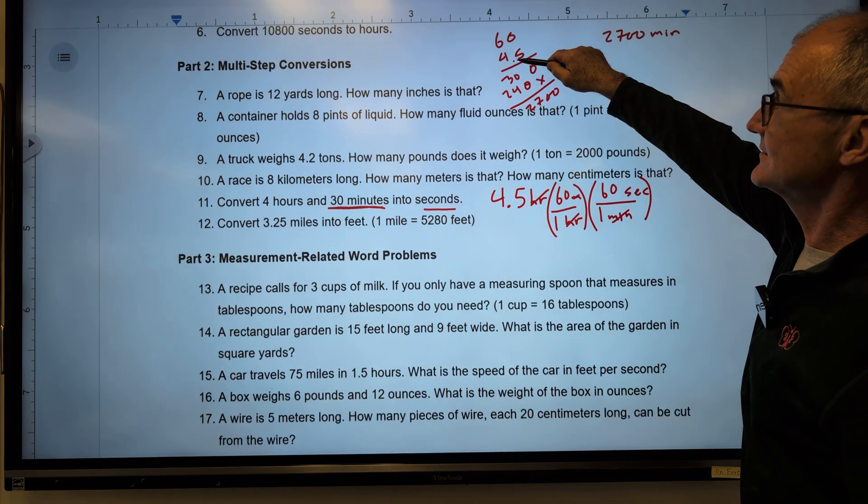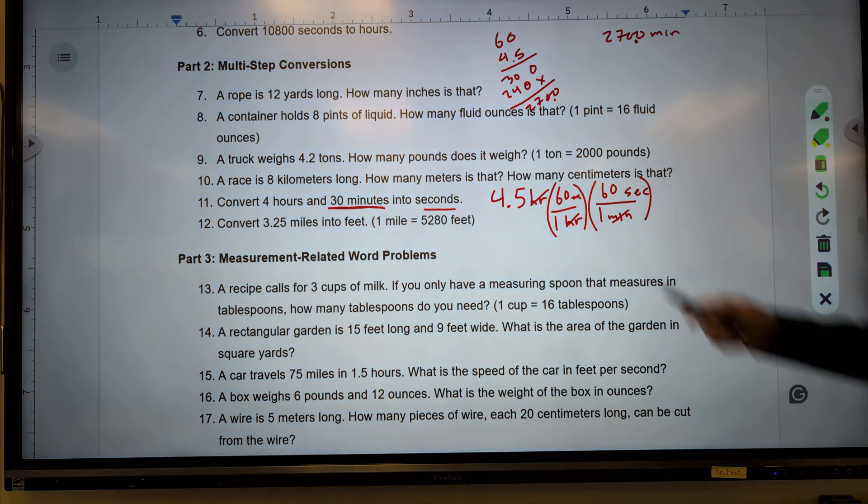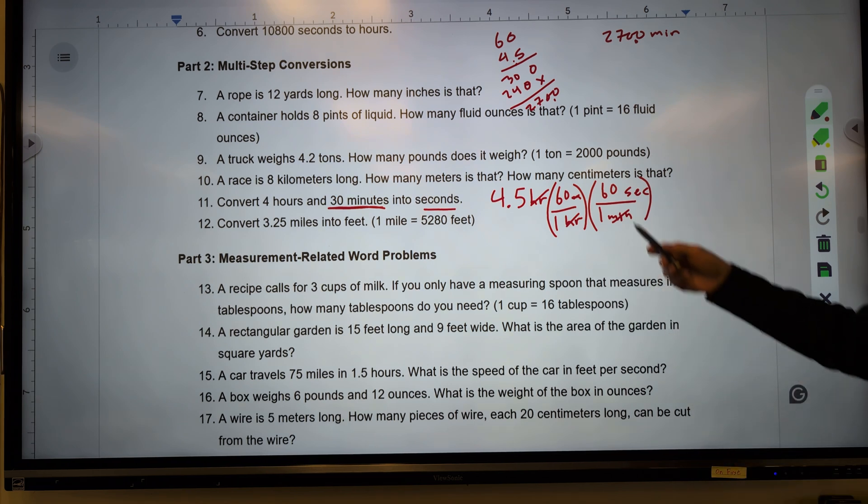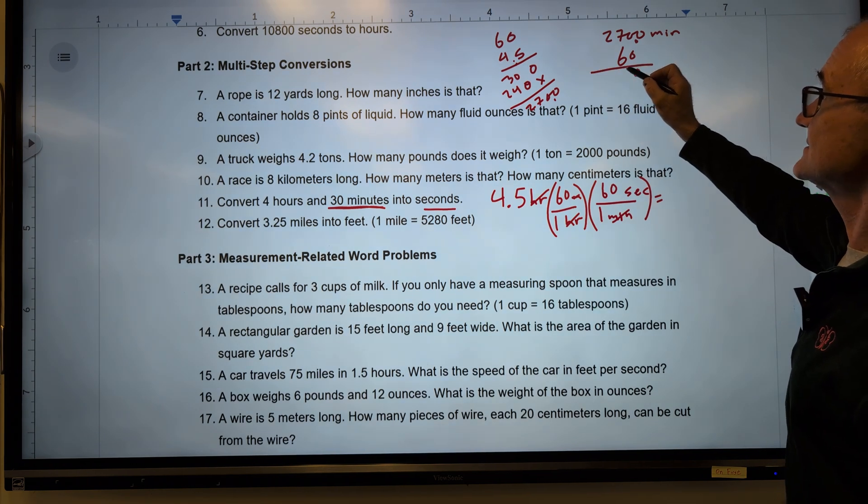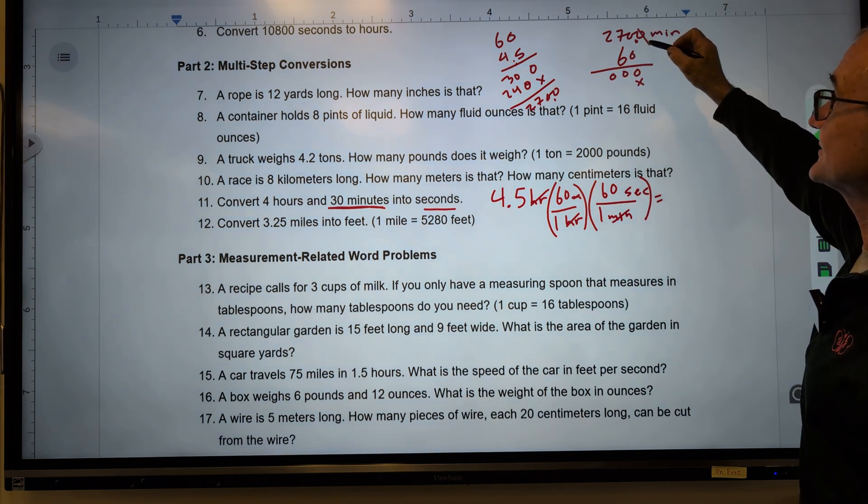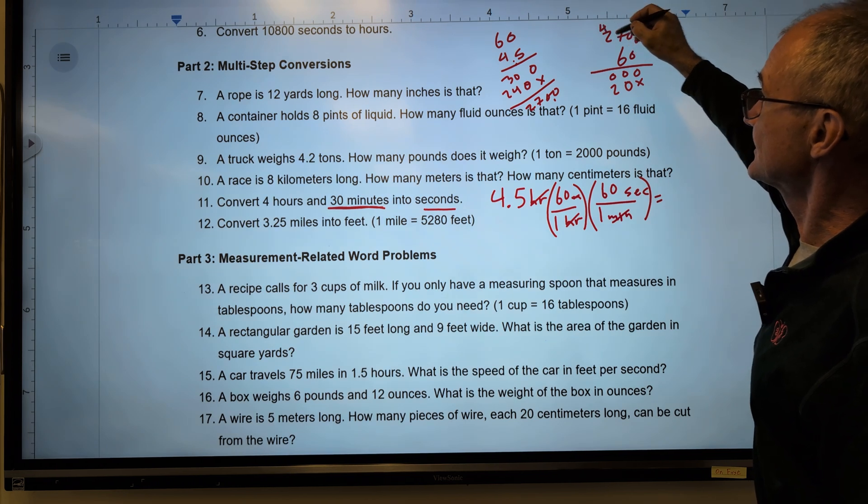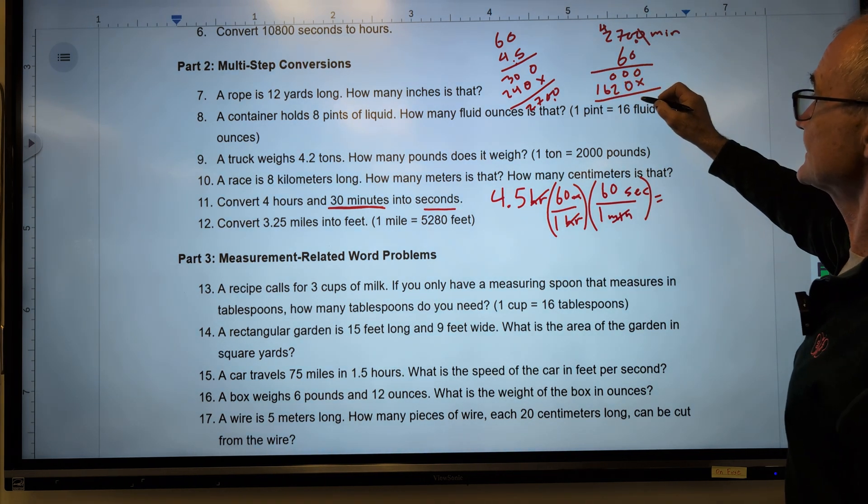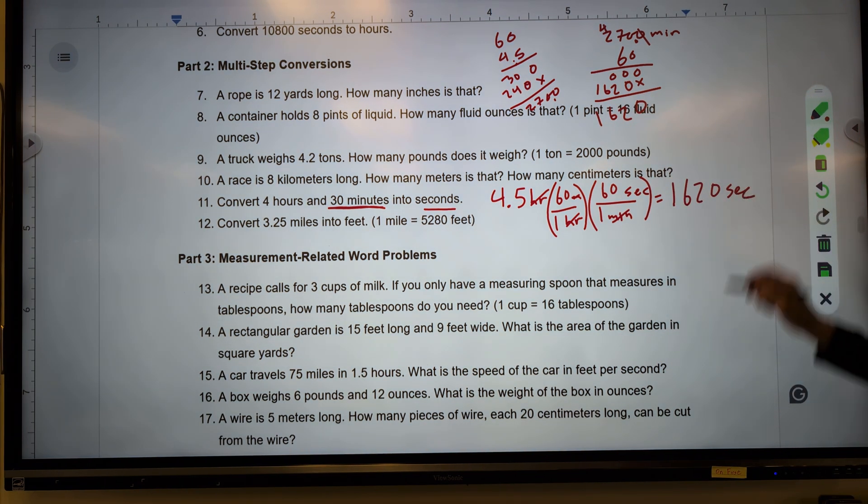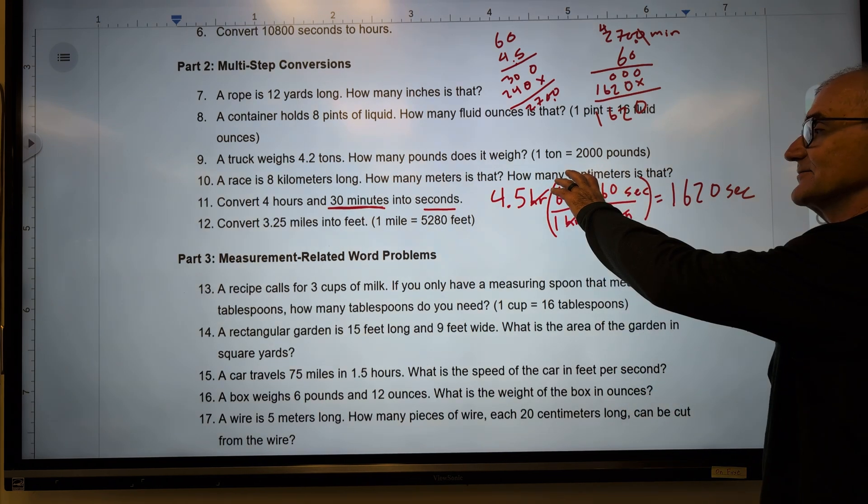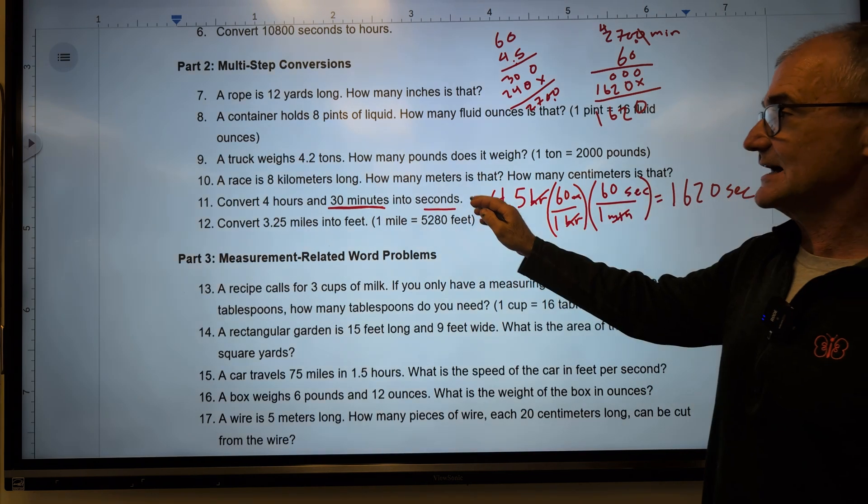And then from here, I need 1 minute down here is equal to 60 seconds. Minutes will cancel, and that's going to give me seconds. So I've got to do that 270 times 60. So I take that 270 times 60, and that gives me 16,200 seconds. So this is really the big idea. Multiplying by a factor of 1. I check my units to make sure they could cancel. It's like in fractions. And then I make sure my answer is what I was asked to find.